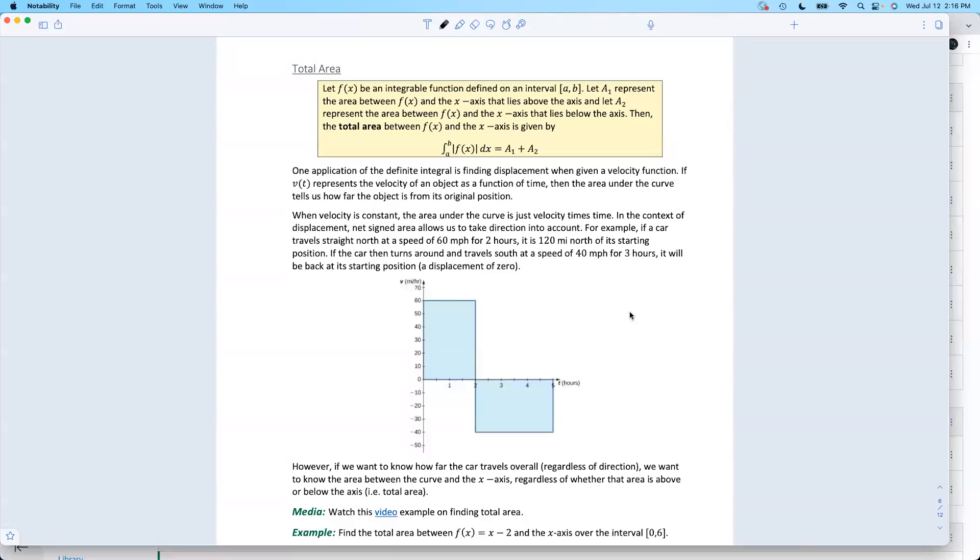Okay. So we've talked about net area. This is a slightly different concept here. When we say total area, we don't care about the positives and negatives. We want to think of everybody as being positive.